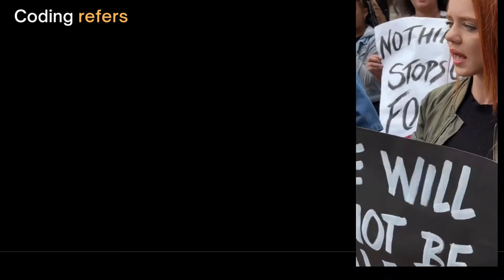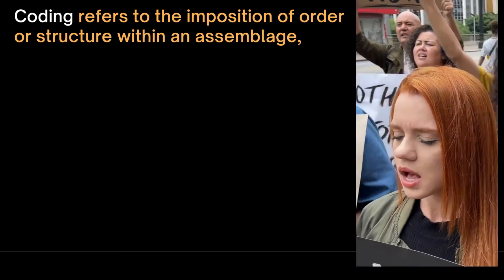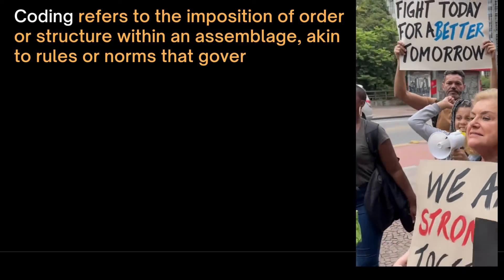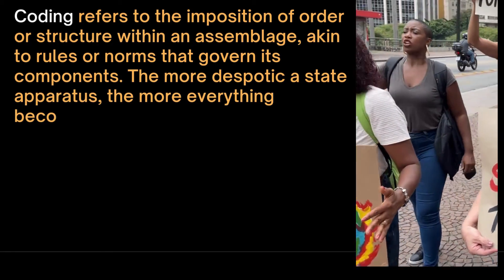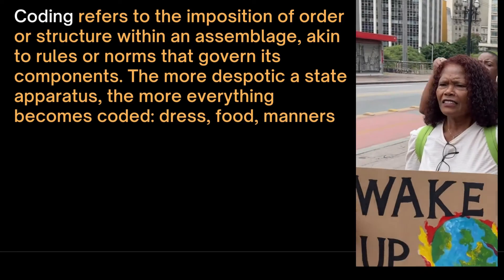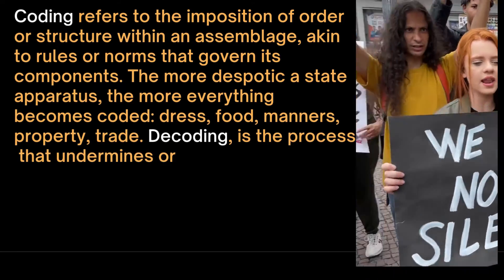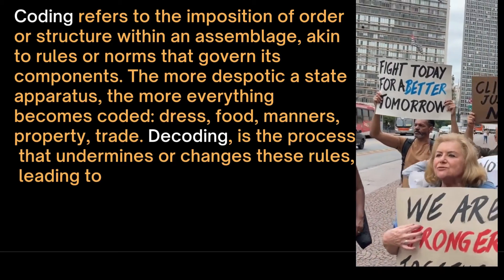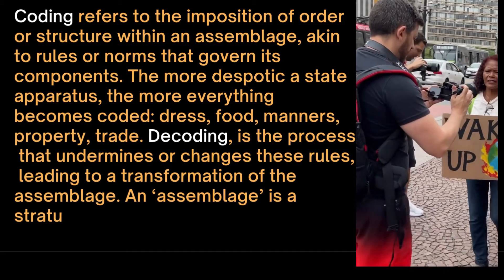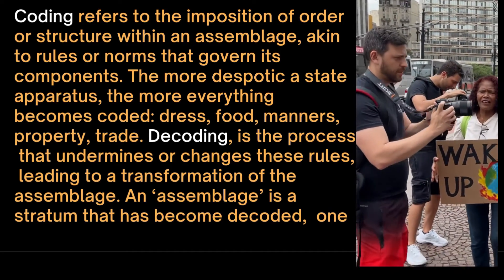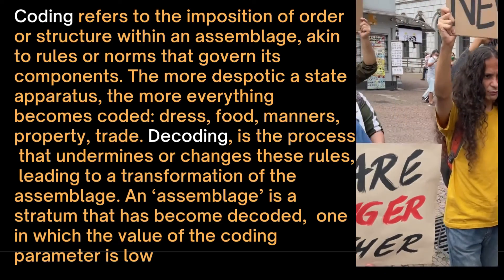Coding refers to the imposition of order or structure within an assemblage, akin to rules or norms that govern its components. The more despotic a state apparatus, for example, the more everything becomes coded — dress, food, manners, property, trade, etc. Decoding is the process that undermines or changes these rules, leading to a transformation of the assemblage. An assemblage is a stratum that has become decoded, one in which the value of the coding parameter is low.